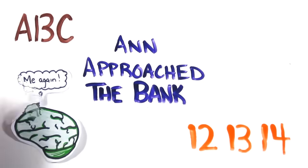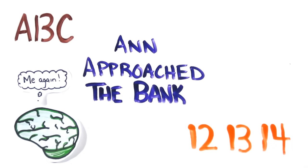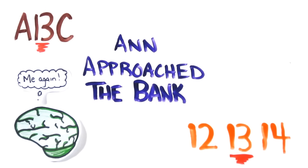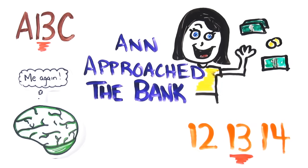But your brain actually interpreted these ambiguous statements without you ever knowing. You could have read it as A, 13, C, or 12, B, 14, but your brain created the context unconsciously. Also, you likely imagined a woman with money on her mind walking towards a building with tellers.